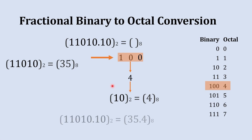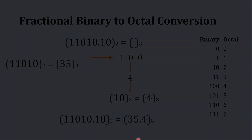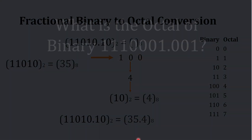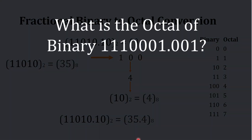We are going to combine both numbers, and the final octal equivalent to this binary number is 35.4. Now pause for a moment — what is the octal equivalent to this binary number? Your options are: A) 71.04 and B) 161.1. See how quickly you can write the answer in the comments below.